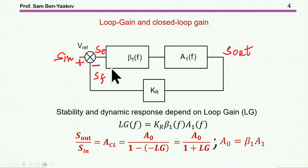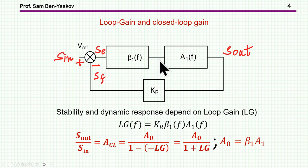Here is a generic representation of a negative feedback system. I have two blocks and a feedback block. We have a summing point here. The signal in is S-sub-in, signal out is S-sub-out, this is the error signal, and this is the feedback, so the gain from the error to the feedback is the loop gain. We call this the loop gain — this is the total gain.